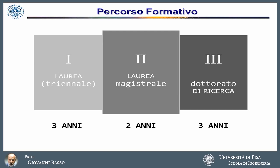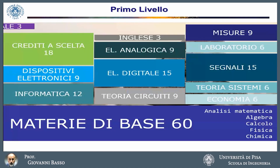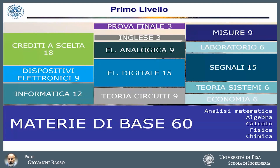What are the contents of the electronic engineering degree course — what we call the first level course? The basic subjects are fundamental: mathematics, including algebra and numerical analysis, then physics and chemistry. Once these exams are faced and passed, you move to more specialized content: economics, systems theory, signals theory, electronic devices, theory of circuits, analogue electronics, digital electronics, applications of electronics, and electronic measurements. There are also elective courses. The course requires intense laboratory activity and an English language exam. The final exam concludes the first-level course.